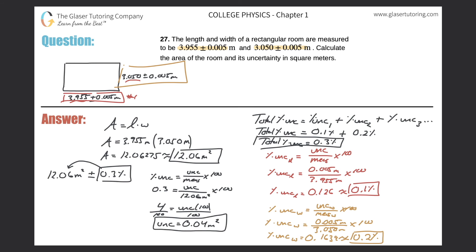So instead of writing the measurement with its percent uncertainty, now we write the area with its actual uncertainty: 12.06 plus or minus 0.04 meters squared. That's the final answer. Notice that the uncertainty goes out to the hundredths place, and the area value also goes out to the hundredths place — they should be consistent. That's a good way to check.